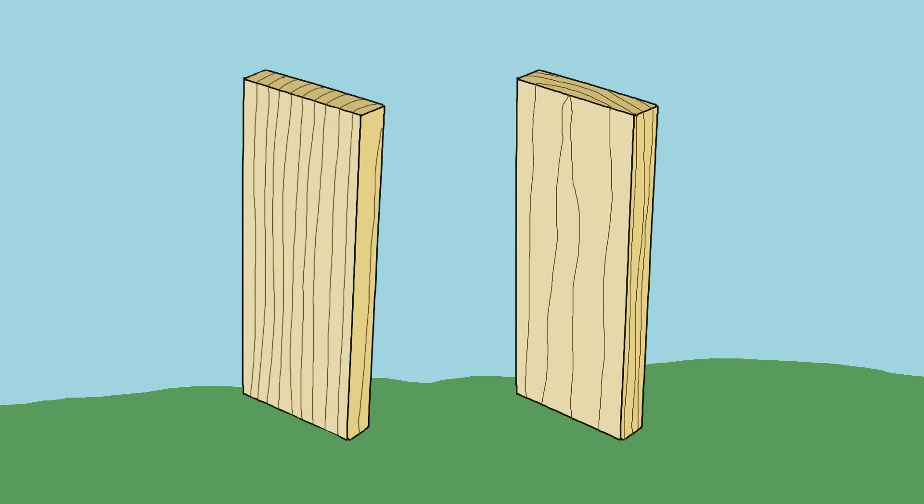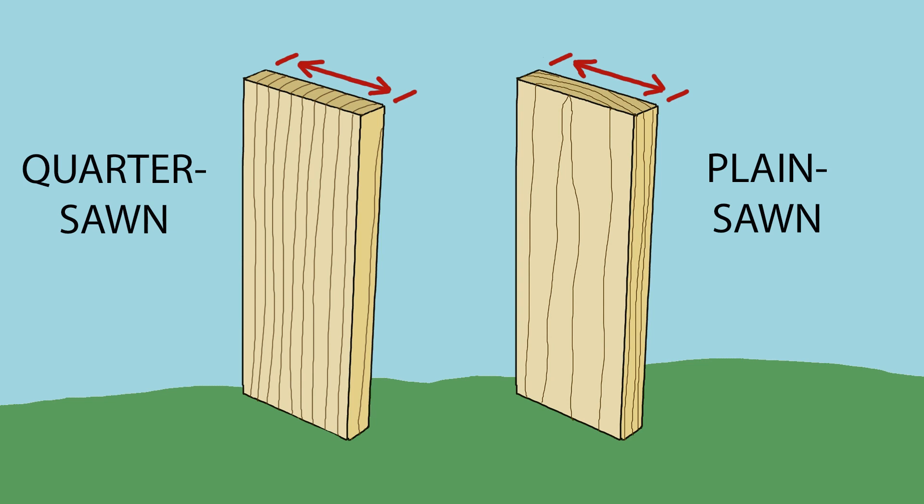Here we have two boards that are dry and have the same dimensions. The left board is quarter sawn, and the right board is plain sawn. If the environment the boards are in becomes more humid, the boards will expand.